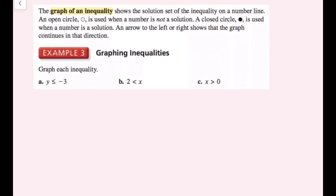The graph of an inequality shows the solution set on a number line. An open circle is used when a number is not a solution. A closed circle, which is filled in, is used when the number is a solution. An arrow to the left or right shows that the graph continues in that direction.